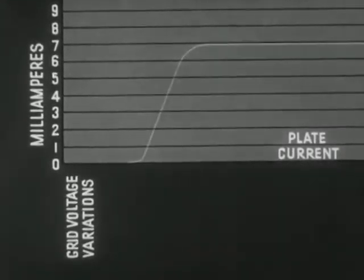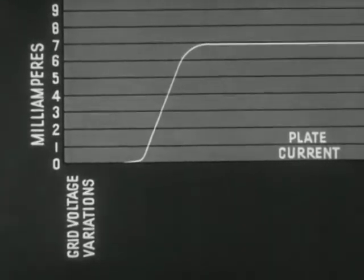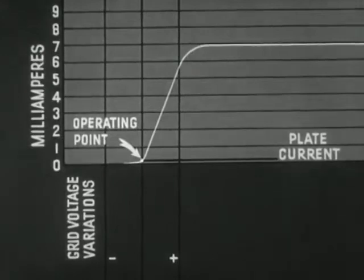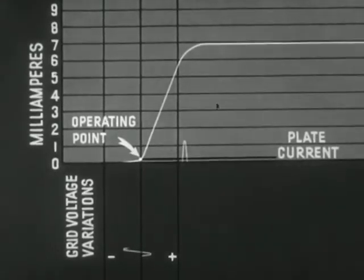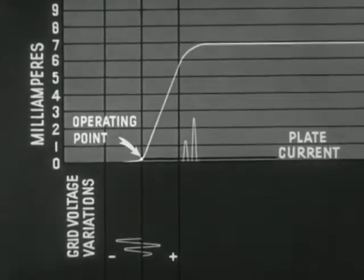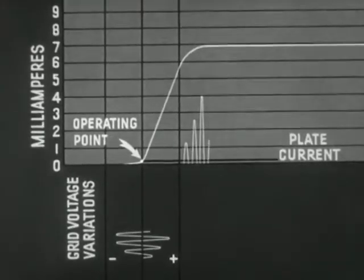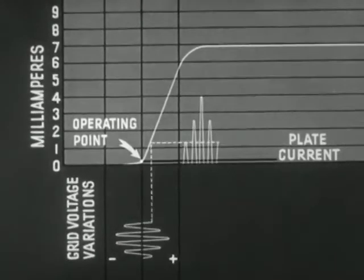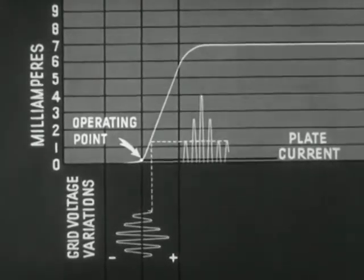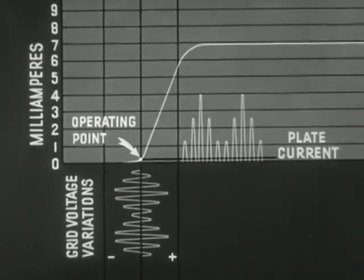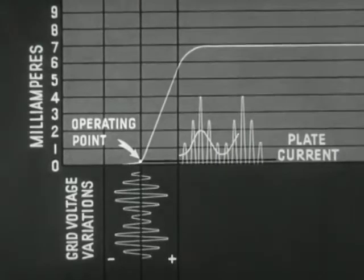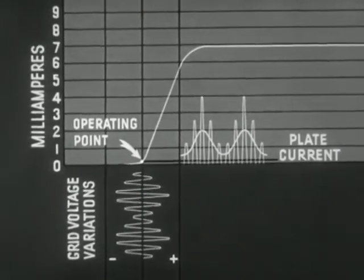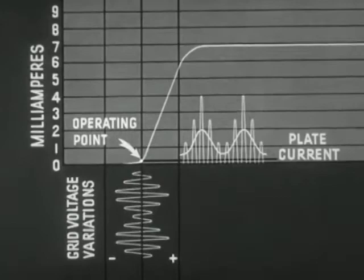The vacuum tube may also be operated as a detector. When used for this purpose, the grid bias is adjusted so that the operating point of the tube is just below the straight portion or knee of the characteristic curve. As a result, the positive half cycle of the radio frequency current in the grid circuit is amplified much more than the negative half of the cycle. The average plate current resulting from the unequal amplification of the positive and negative half cycles will be a direct current pulsating at audio frequency. Such a current will operate the earphones.